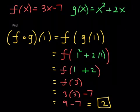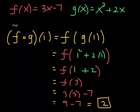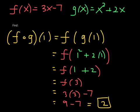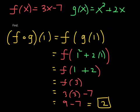f composed with g at 1 is, by definition, f of g of 1. So we plug 1 into g first: 1 squared plus 2 times 1, which turns out to be 3. Then I plug 3 into f: 3 times 3 minus 7, which is 9 minus 7, which is 2. I hope you did well on that one.